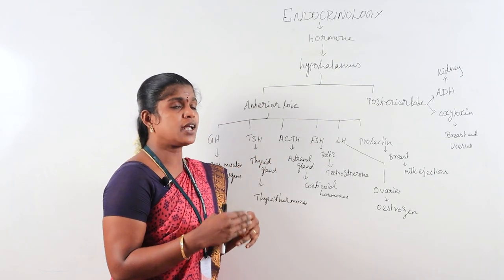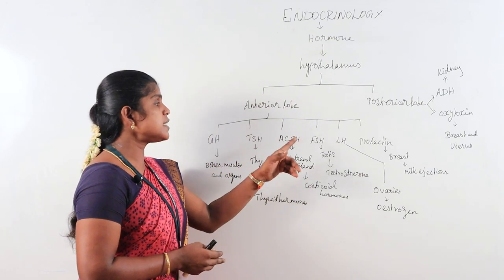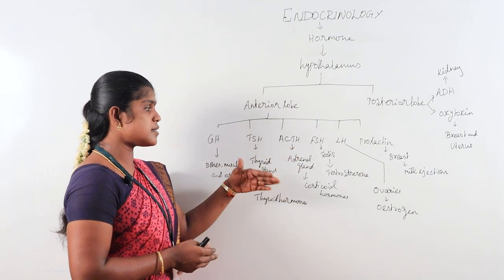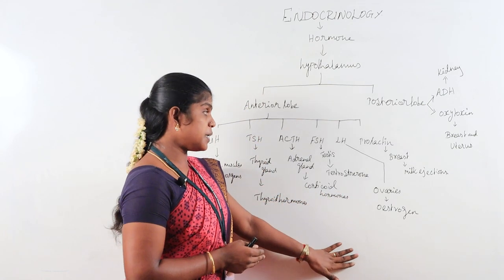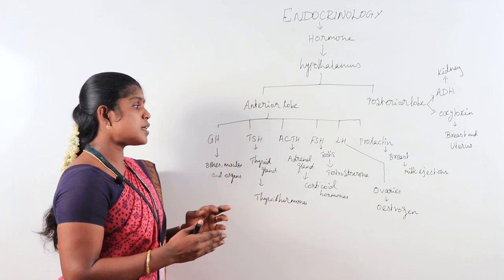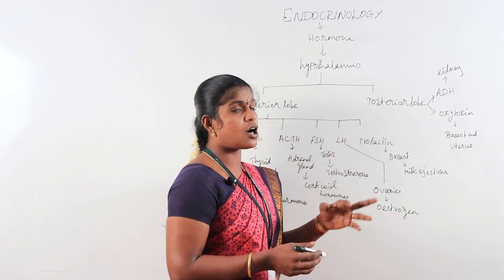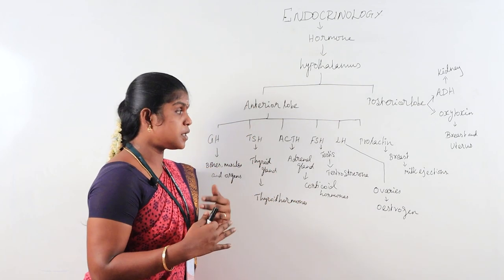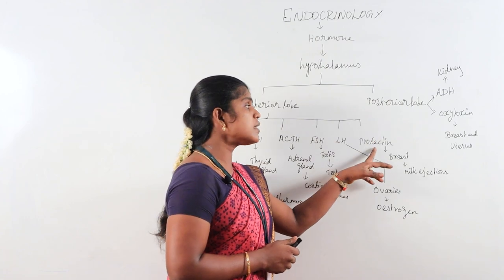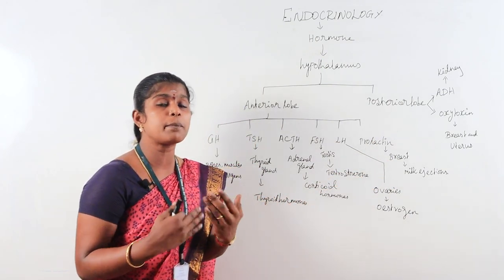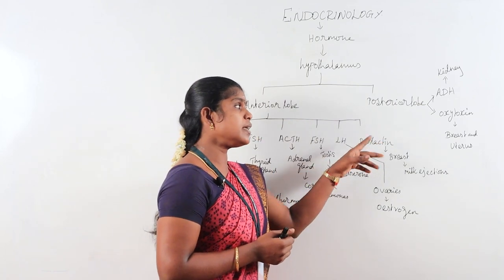ACTH hormone increase or decrease is associated with diabetic and non-diabetic conditions. FSH hormones are very specific for infertility. LH hormone imbalance causes irregular periods, which are the main reasons associated with LH and prolactin disorders.